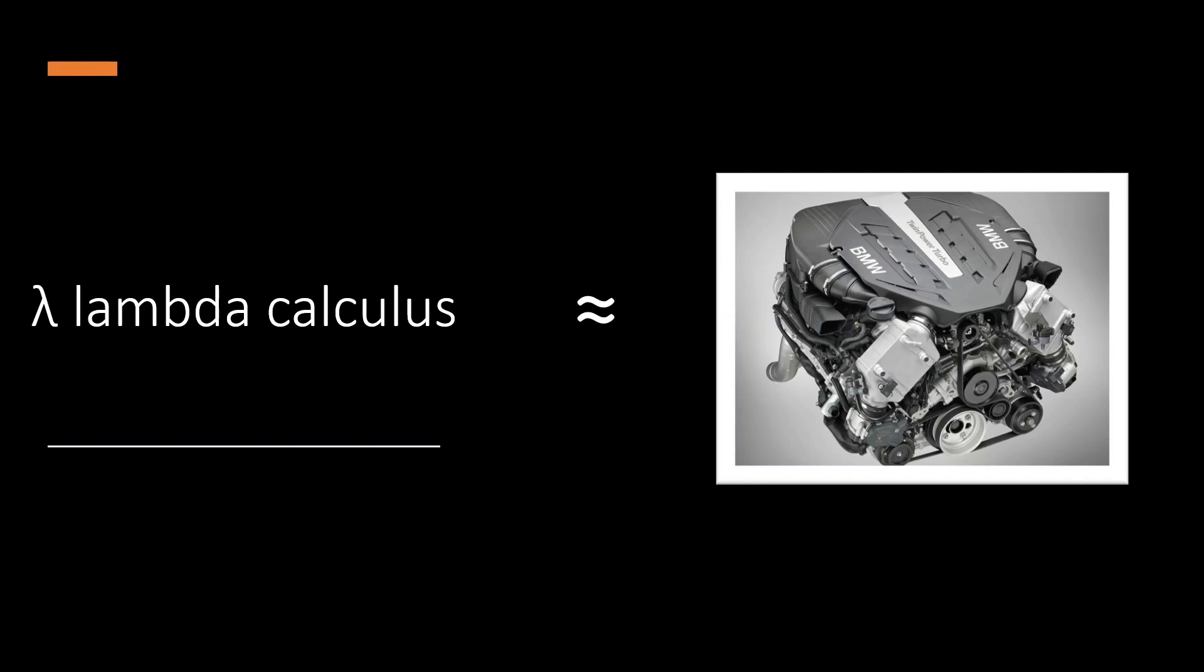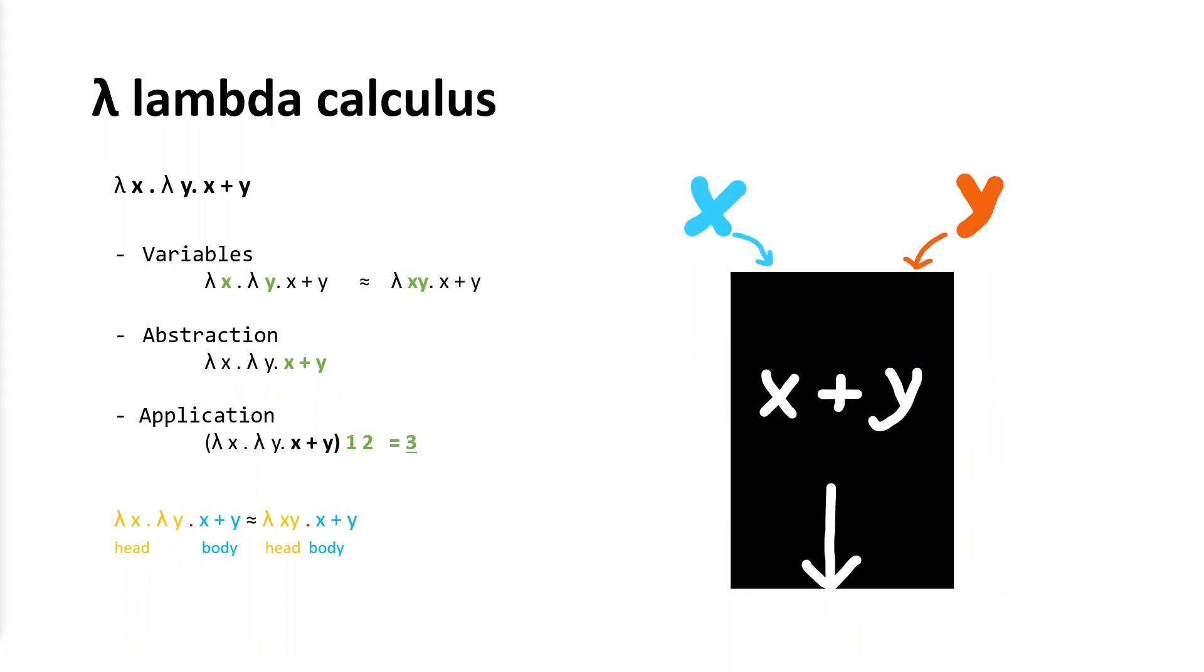So, what's the definition of lambda calculus? It's a formal system or transcription system in mathematical logic. Every single program can be rewritten in lambda calculus because it's a universal model of computation equivalent with Turing machine.